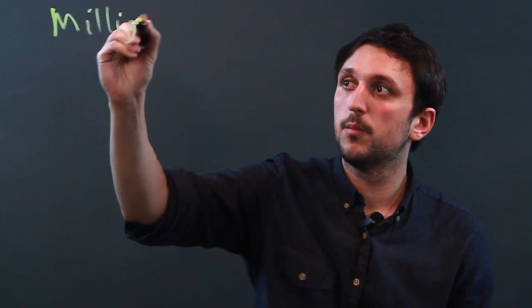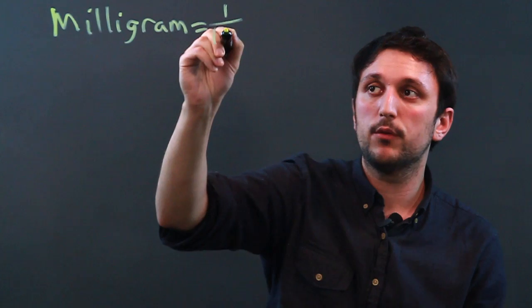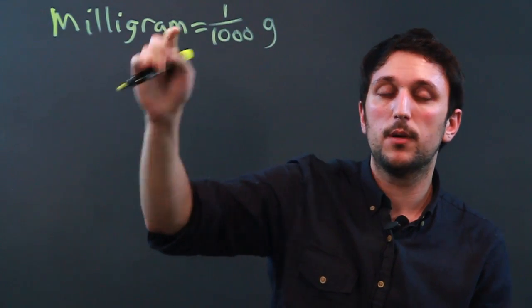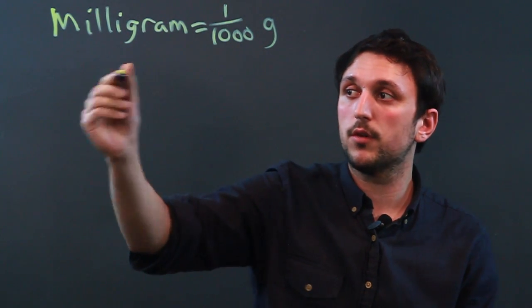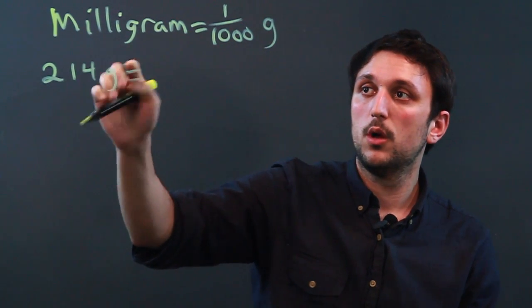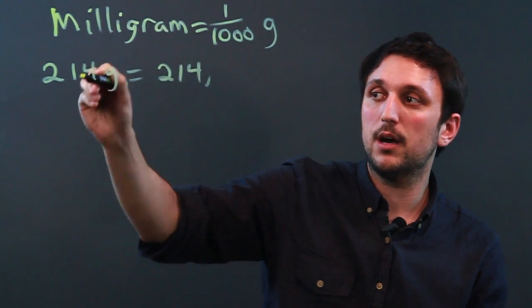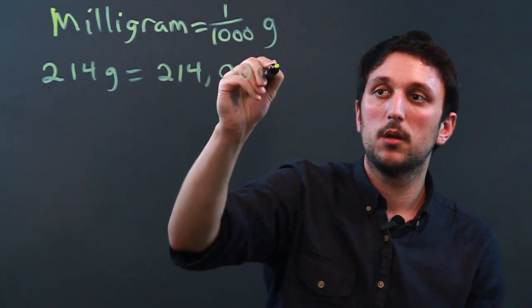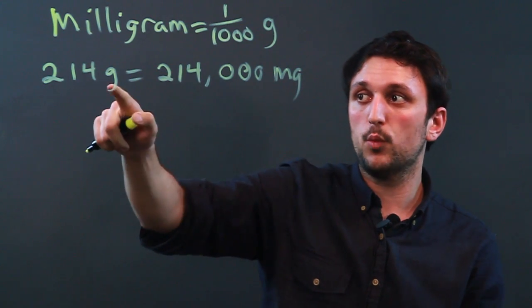Now a milligram equals one one-thousandth of a gram and it's all about the prefixes. So if we wanted to convert, say, 214 grams, it would be 214,000 milligrams because every 1,000 milligrams is one gram.